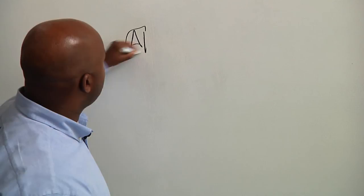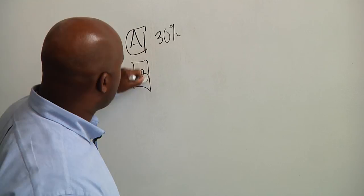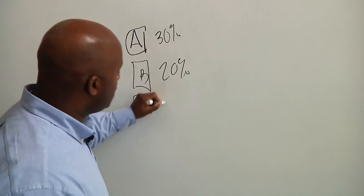So with Company A, you're competing against, they've got 30% of the marketplace. Company B, they've got 20% of the marketplace. You're Company C and what you're trying to do is go from 3% in the market to 5% in the market.